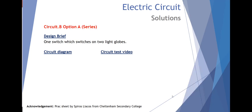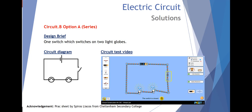Circuit B, option A series, one switch which switches on two light globes. One switch, two light globes.